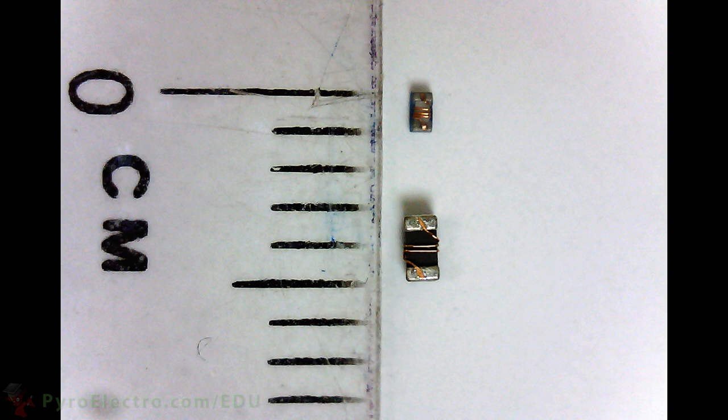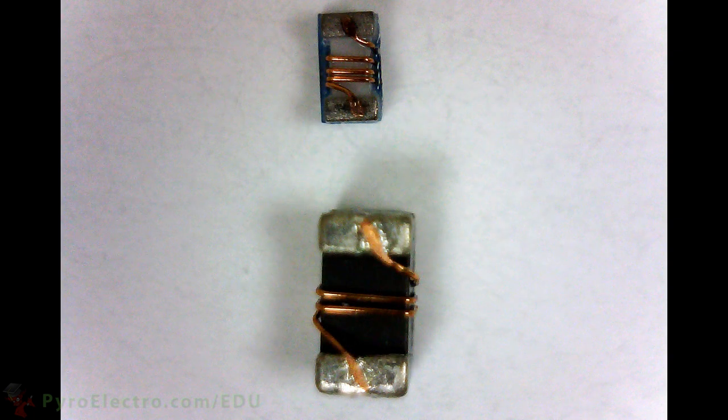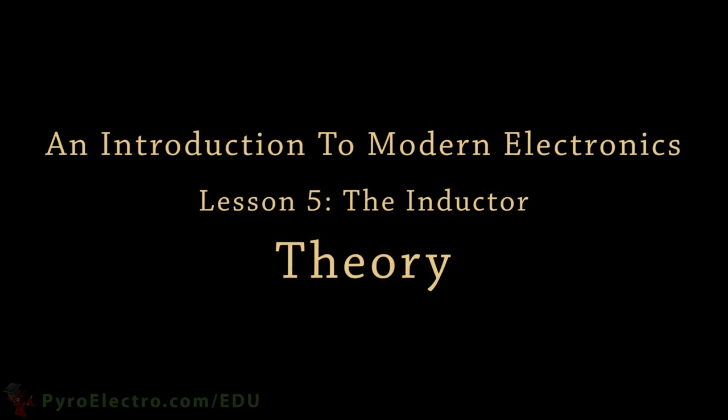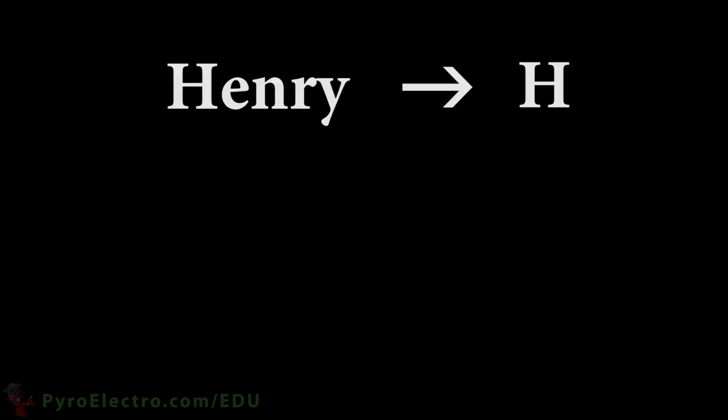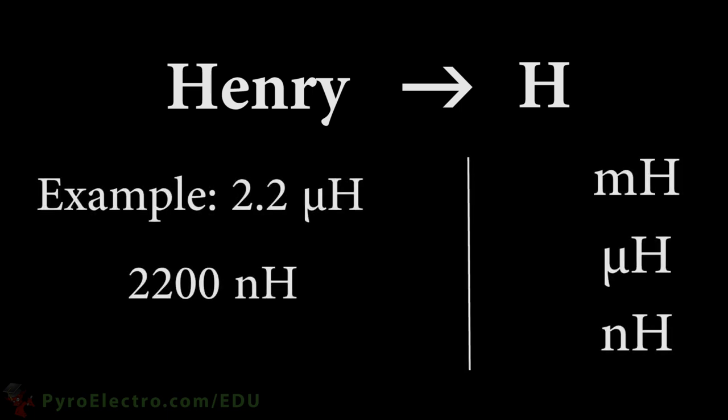Let's wander into some inductor theory and learn how to find out what inductor has what inductance value and how inductors fit in with voltage and current. To start, electrical inductance is measured in Henrys, just like the name Henry, and the unit used is the capital letter H. For example, 2.2 microhenrys or 2200 nanohenrys inductor is a common value used in electronics.